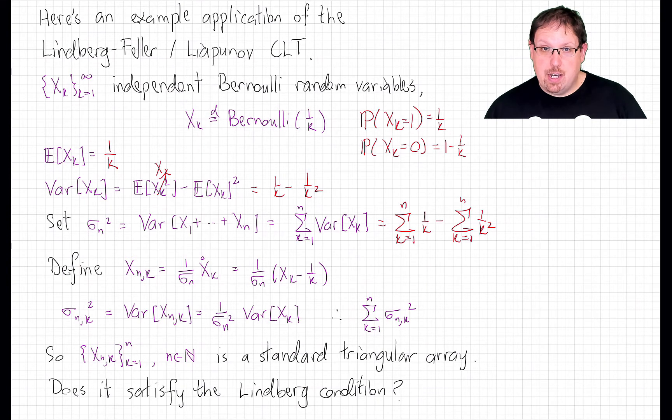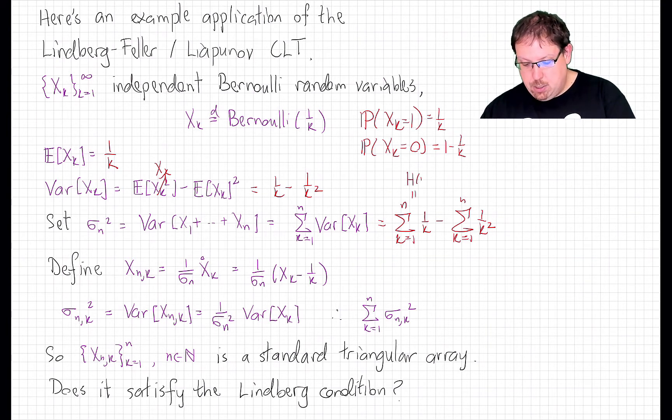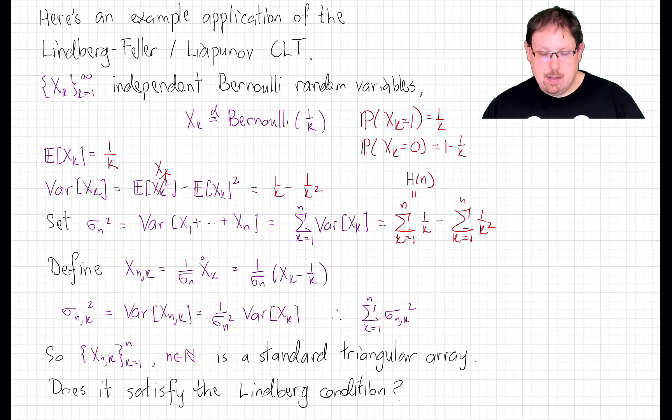Now, that second term converges, as we know, to pi squared over 6 as n goes to infinity, so it stays bounded, but the first term blows up. That sum is called H(n), the harmonic number, and it's a classical theorem that the harmonic number is approximately log n.